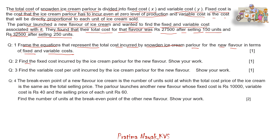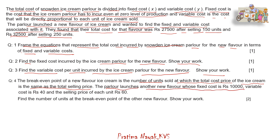Question 2: Find the fixed cost incurred by the ice cream parlor for the new flavor — show your work. Question 3: Find the variable cost per unit for the new flavor — show your work. Question 4: The break-even point of a new flavor is the number of units sold at which the total cost price equals the total selling price. The parlor launches another new flavor with fixed cost rupees 10,000, variable cost rupees 40 per unit, and selling price rupees 60 per unit. Find the number of units at the break-even point — show your work.